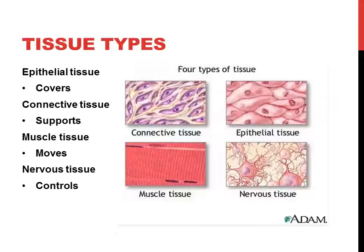The third type is muscle tissue — that's pretty obvious. It moves things. That can be smooth muscle in the intestine that moves our food along, skeletal muscles that literally move our arms and legs, or cardiac muscle that contracts and moves our blood.